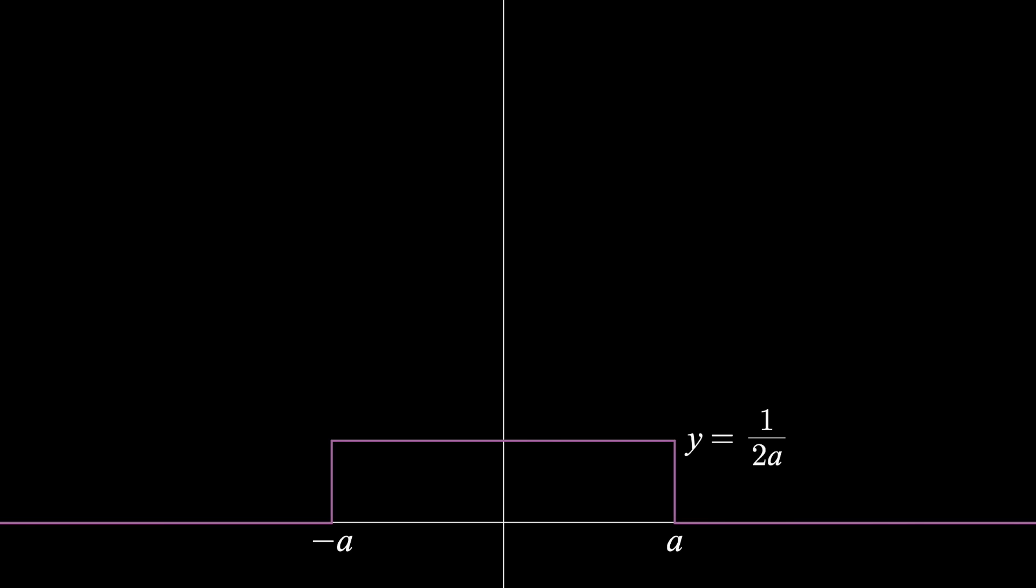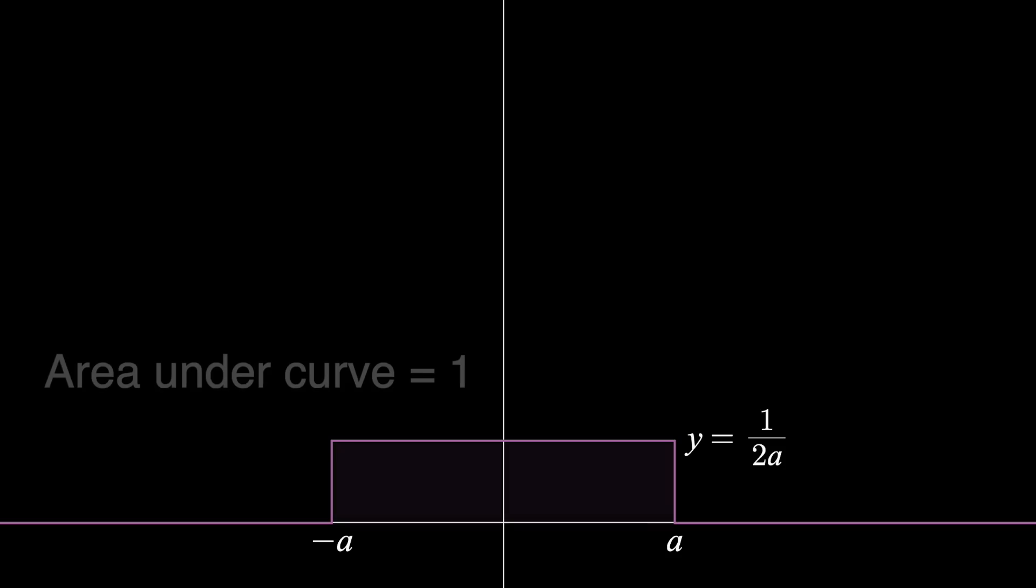Here's a function that is zero everywhere except between negative a and a. In that region, the y value is a constant one over 2a. So this is just a rectangle with an area of one.